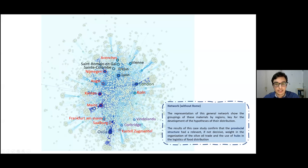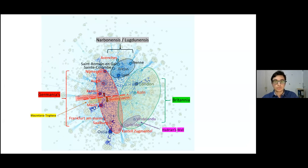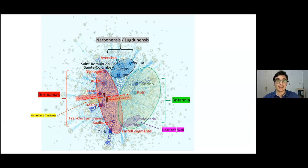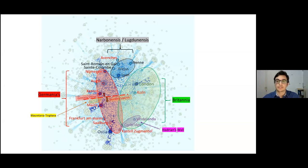The representation of this general network shows the groupings of materials by regions key for the development of the hypothesis of their distribution. The results of this case study confirmed that the provincial structure had a relevant weight in the organization of the olive oil trade and the use of hubs in the logistics of food distribution. The most interesting finding is that the network itself represents this organization in hubs for the distribution of food through the empire without even interacting with it, confirming what was already established mathematically by Xavier Rubio, our lead computational researcher. It is then our turn to elaborate hypotheses and refute or confirm them depending on both the data and other factors, such as written sources or field archaeology.